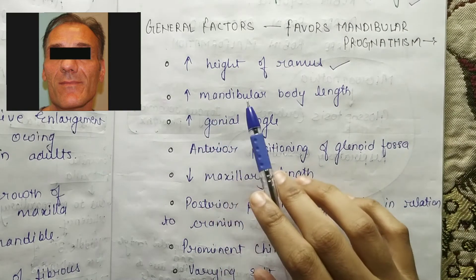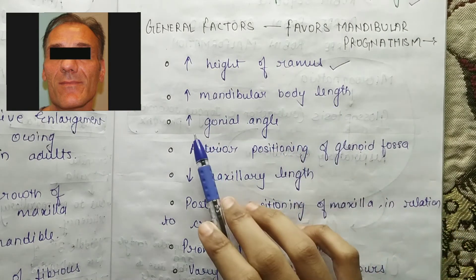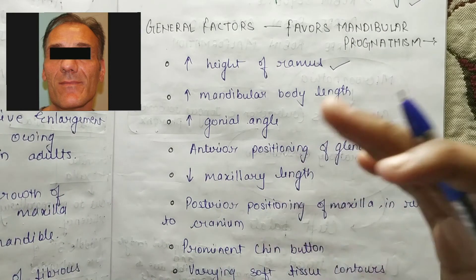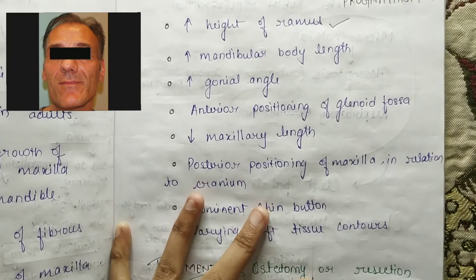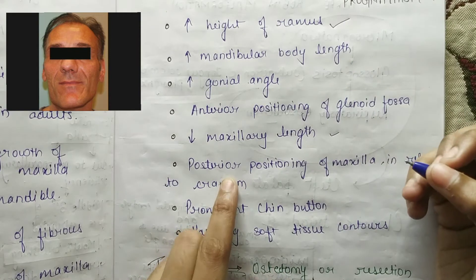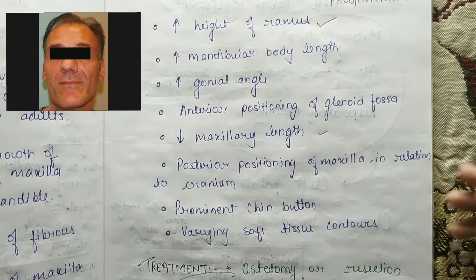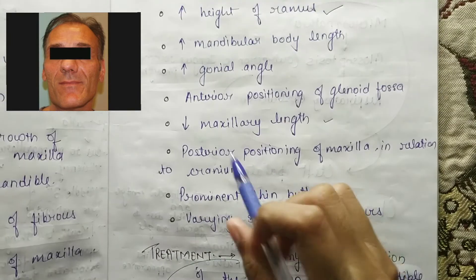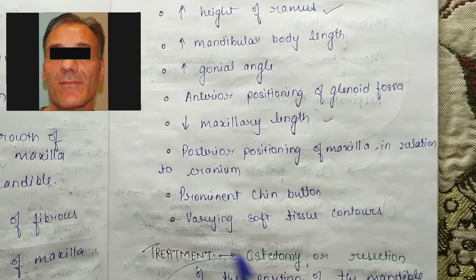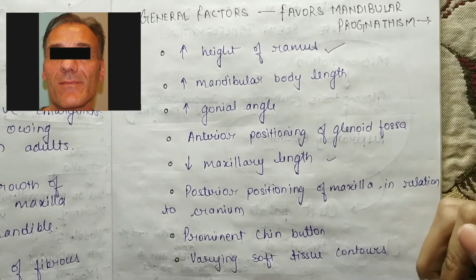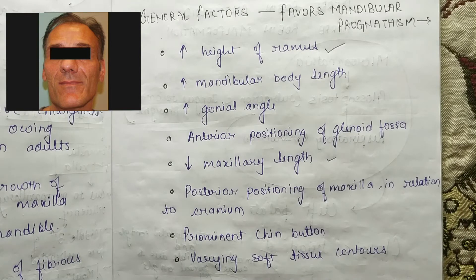The general factors which favor mandibular prognathism are: increased height of the ramus, increased mandibular body length, increased gonial angle, anterior positioning of the glenoid fossa, decreased maxillary length, and posterior positioning of the maxilla in relation to the cranium, along with a prominent chin and soft tissue contours. These are the factors which can cause mandibular prognathism or macrognathia.